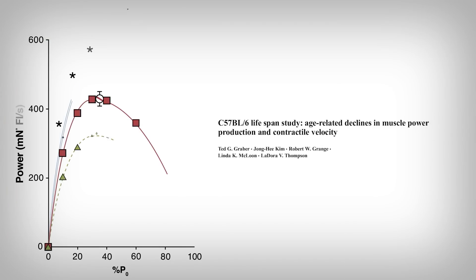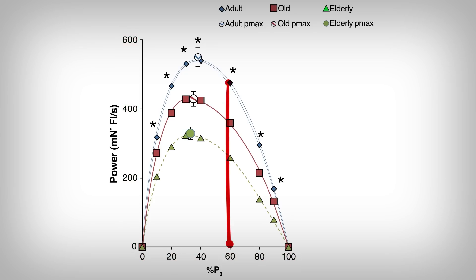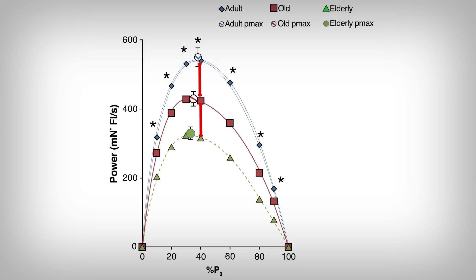Looking at data on power — here from mice of varying ages using more invasive techniques — the vertical axis is muscular power and the horizontal axis is the force applied to the muscle. For example, at 60% of maximum force, how much power was generated. The blue line is young adult mice, the red is old mice, and the green is very old mice. There's a stepwise decrease in power across a number of force percentages applied, and this is also seen in humans. So with age, there's reduced power.